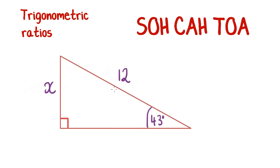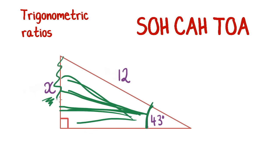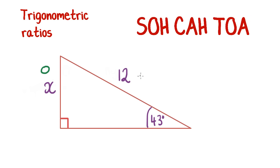Say we're given that the angle down here is 43 degrees and the hypotenuse is 12, and we're trying to find the length of the unknown side. Because it's a right angle triangle we can use SOHCAHTOA. The unknown X is opposite that angle — it's the side the angle splays out to create — so this is the opposite. The hypotenuse is 12, so we're using O and H.